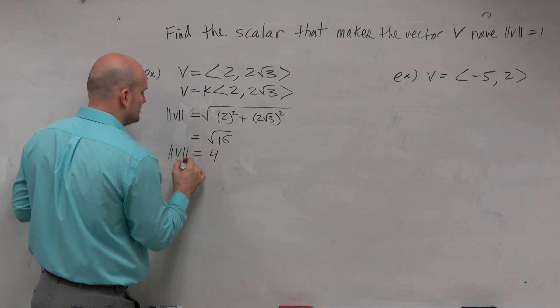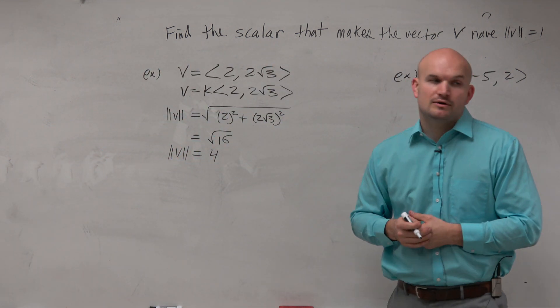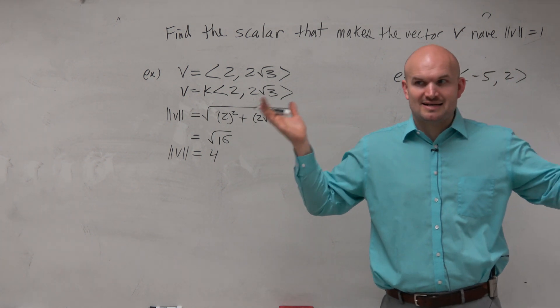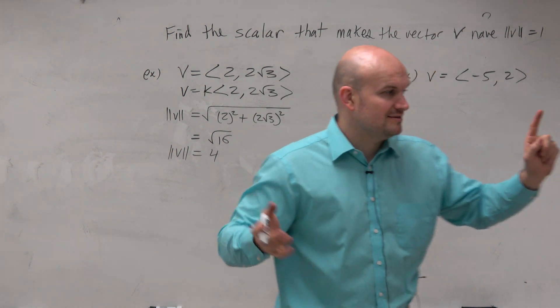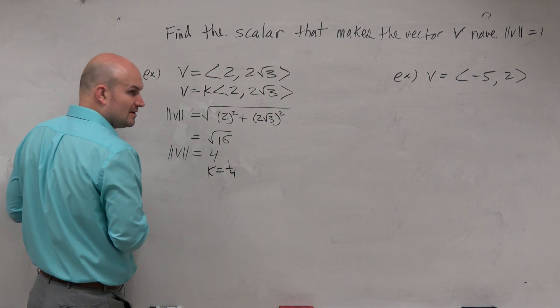So does my vector v have a magnitude of 1? No, it has a magnitude of 4. Crap. So therefore, I got to think about, well, then what number should I multiply by my vector so it has a magnitude of 1? So therefore, k equals 1/4.